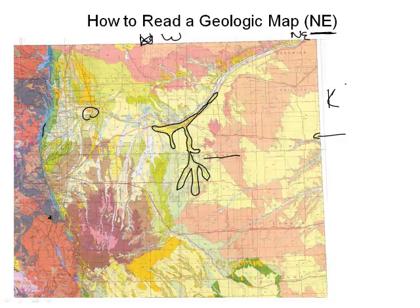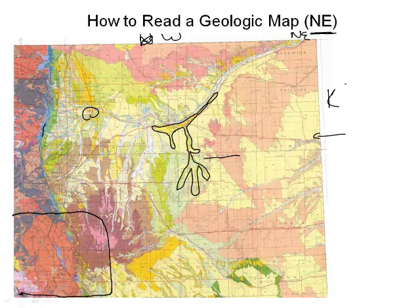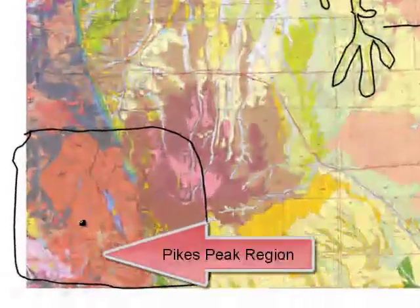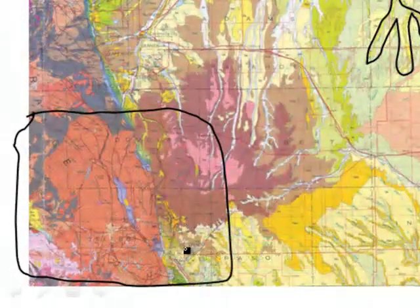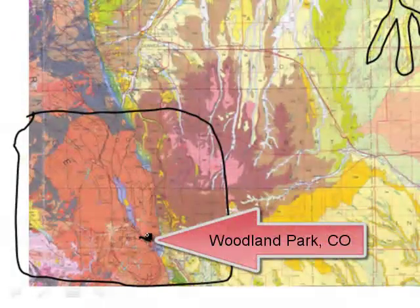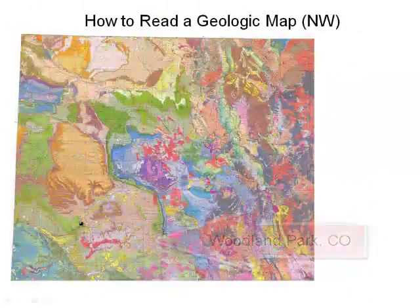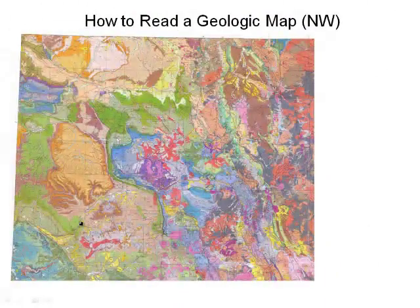Now, an area that everyone gets interested in — we live close to Colorado Springs, Colorado, and that's down in this section. I'm going to zoom in on this a little bit later. Right here is where Pikes Peak is, and you can see it's very red, so that's an igneous formation. We can figure out what its variety is. Here we are in Woodland Park, about right there.